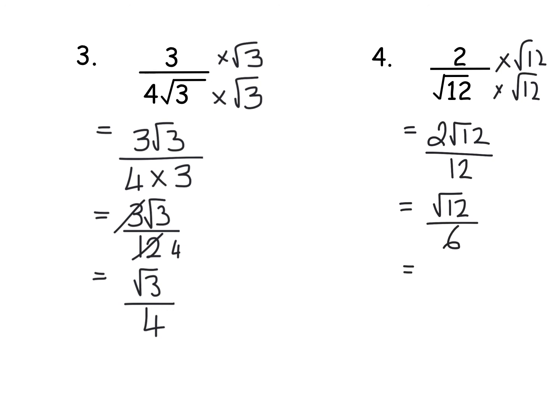Now similar to before that 2 and the 12 can cancel leaving me root 12 all over 6. But eagle eyed pupils might spot wait a minute 12 is one of those surds that can simplify. So I'm now going to simplify the 12 and say well that's root 4 root 3.